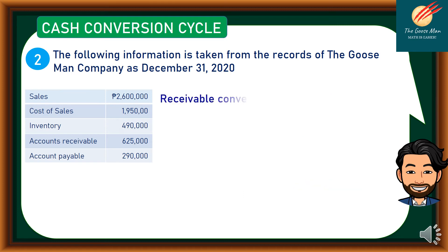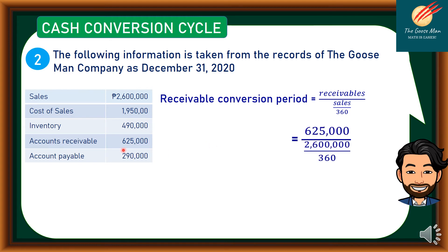The second item is the receivable conversion period. Using the formula — receivables divided by sales, all over 360 — we have 625,000 as accounts receivable and 2,600,000 as sales. Therefore, the receivable conversion period equals 87 days.